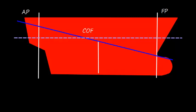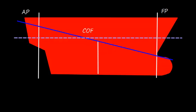In the previous videos parts 1, 2, and 3, we discussed that we need to have drafts at the forward perpendicular, aft perpendicular, and mid-length so that we can find the draft at the center of flotation. The draft at the center of flotation is the hydrostatic draft. The center of flotation is the point about which a ship trims.